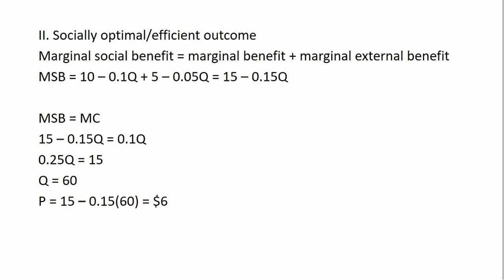To find the socially optimal or efficient outcome, we need to capture the true social benefit of using lawn tick control, and that's going to be captured by the marginal social benefit. The marginal social benefit is the private marginal benefit plus the marginal external benefit. So all I'm going to do is add up the two equations from the previous screen.